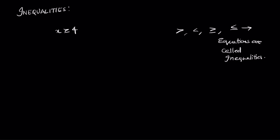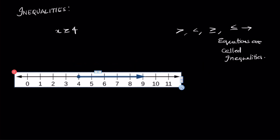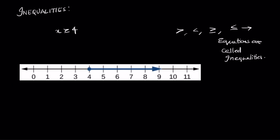An example of how to represent this inequality: the most common method of representation is by using a number line, where we draw a line, number it, and choose the point where we are including the value. We draw an arrow representing that it's greater than and going towards infinity — there is no end point, so it extends to infinity.